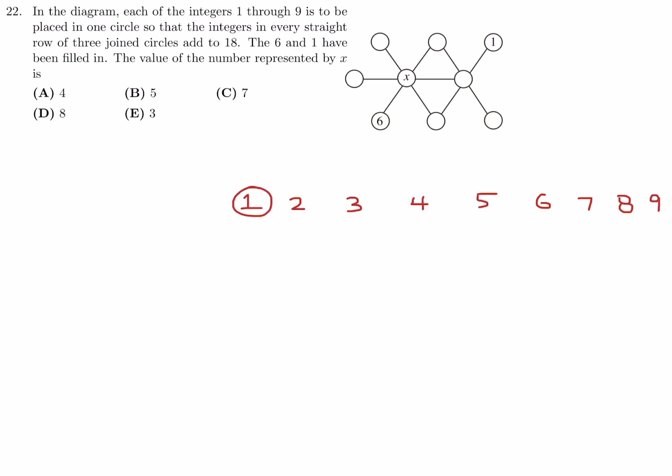This is a trial-and-error problem — you fiddle around until everything fits. Starting with the row containing 1: since all three numbers must add to 18 and one of them is 1, the other two must add to 17. The only way to get 17 with the remaining numbers is 8 and 9. It's trial and error — you're not sure if 8 goes here or there.